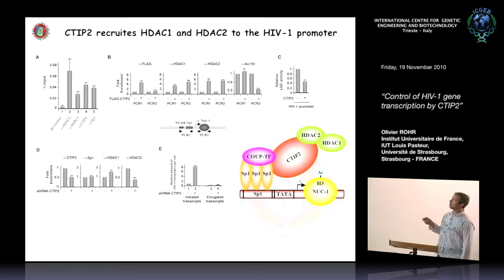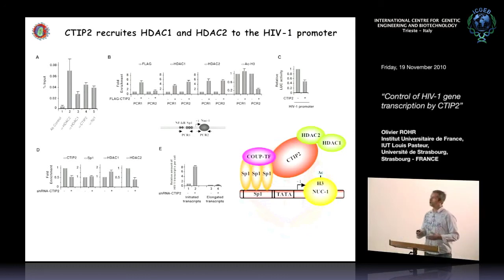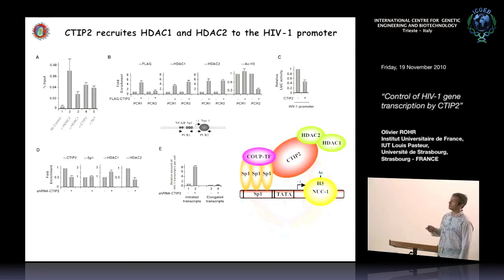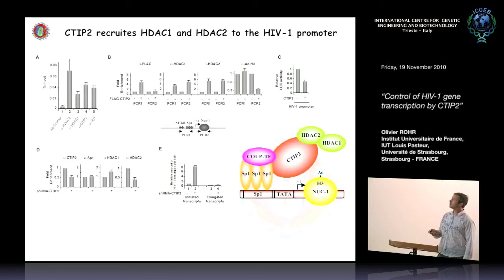Most results were confirmed by looking at CTIP2 knockdown cells. We confirmed that at least HDAC2 was reduced at the promoter. Surprisingly, HDAC1 increased, which we explained by the ability of HDAC1 to be recruited directly via SP1. CTIP2 interacts with these HDAC enzymes, recruits them to the HIV-1 promoter, and this results in deacetylation of the NUC1 nucleosome.